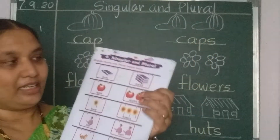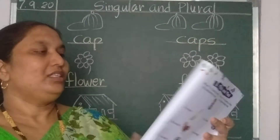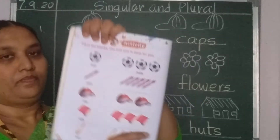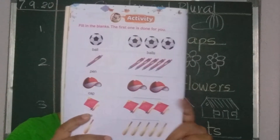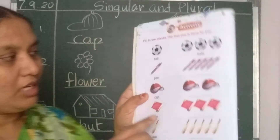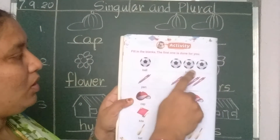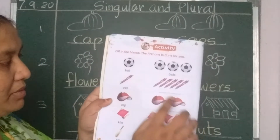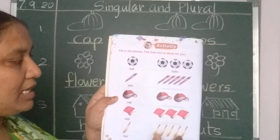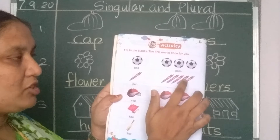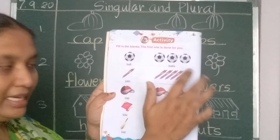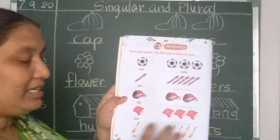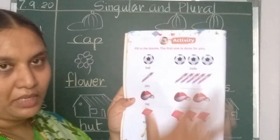Cat, cats. Turn the page. See here. You should write here. Ball, balls — it is already written here. But here you should write: pen, pens — P-E-N-S. Cap, caps. Kite, kites. Bag, bags. This page you have to do.